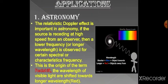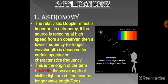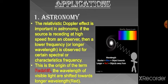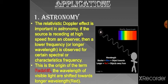Coming to the applications, first, the Doppler effect used in astronomy. The relativistic Doppler effect is important in astronomy. If the source is receding at high speed from an observer, then a lower frequency is observed for certain spectral or characteristic frequencies. We can see from this diagram that the source is moving away from the observer at a higher speed.